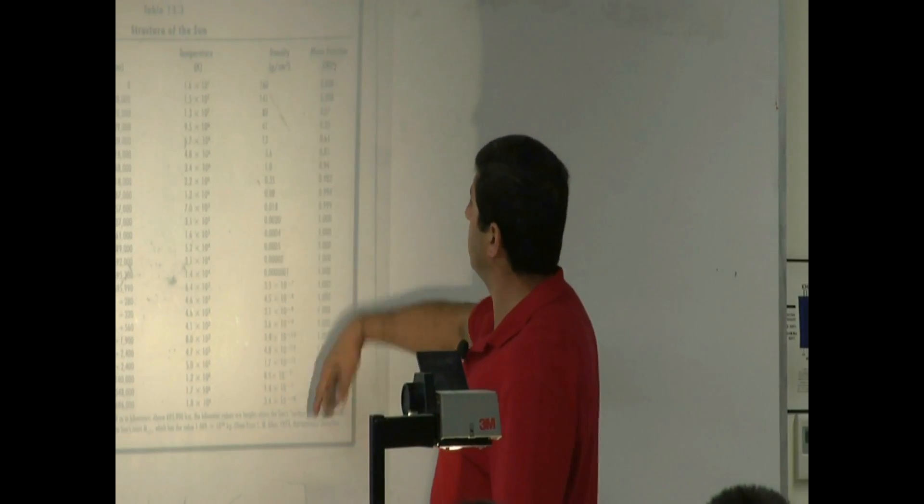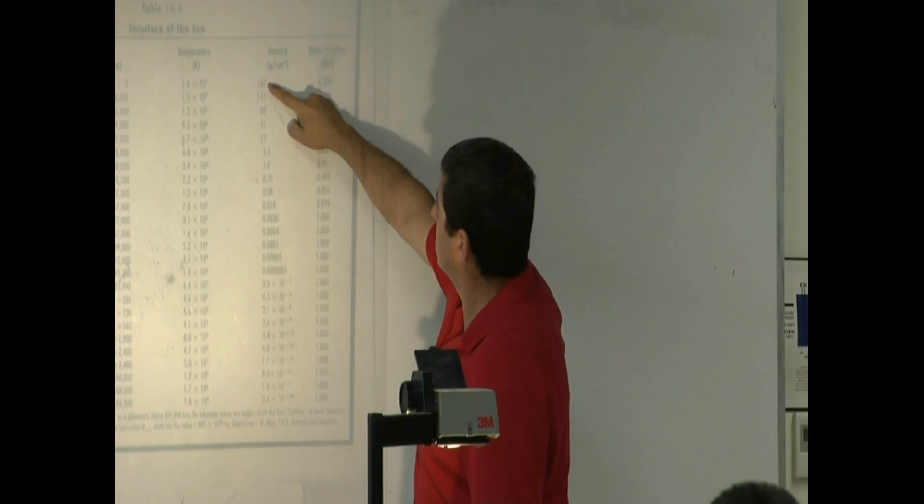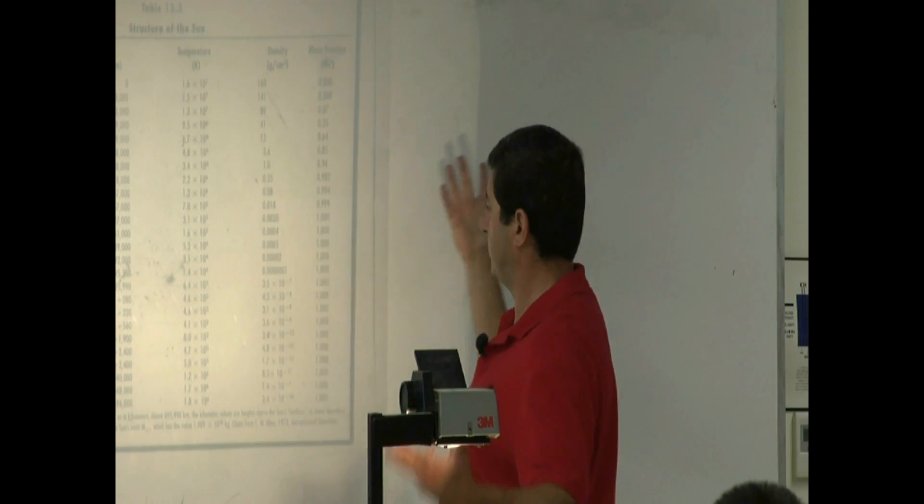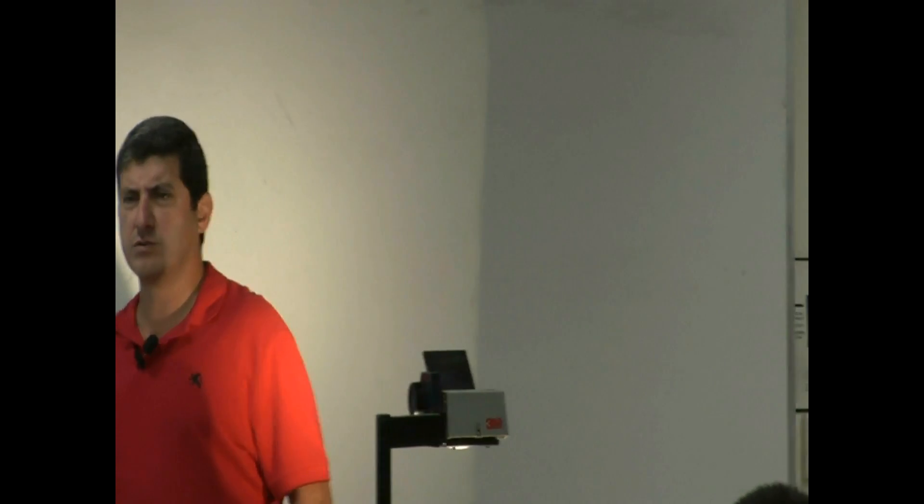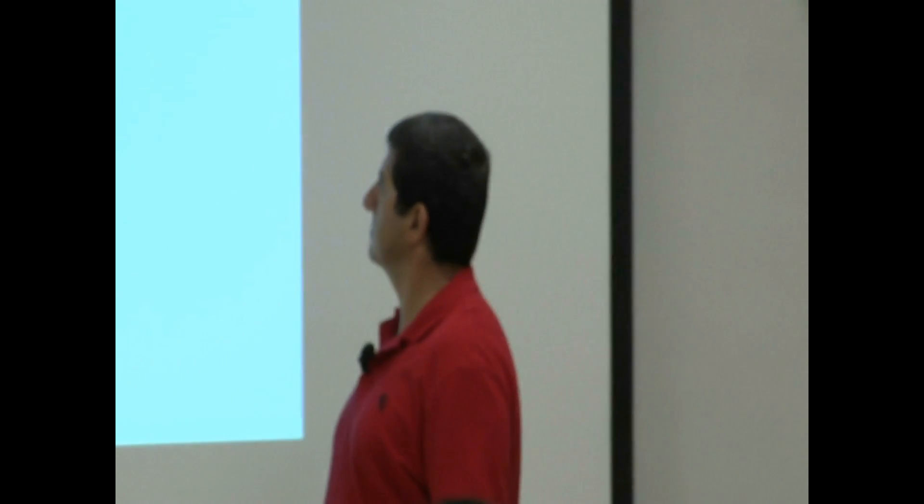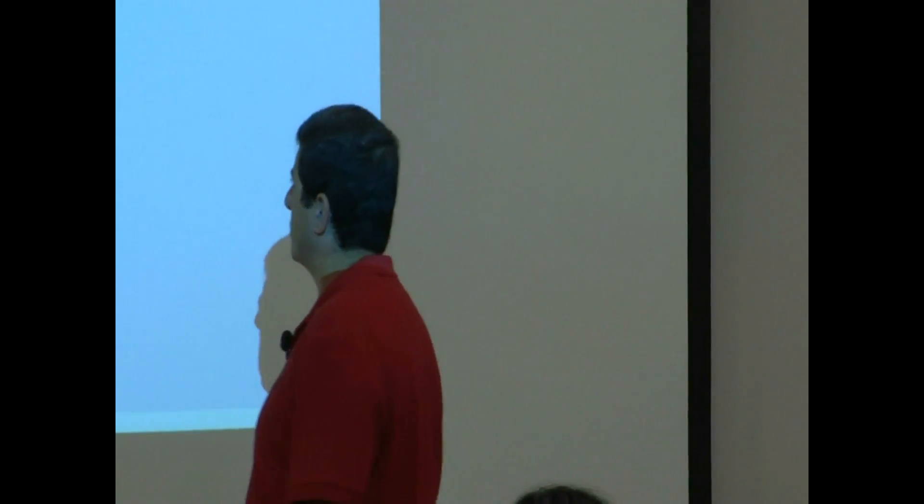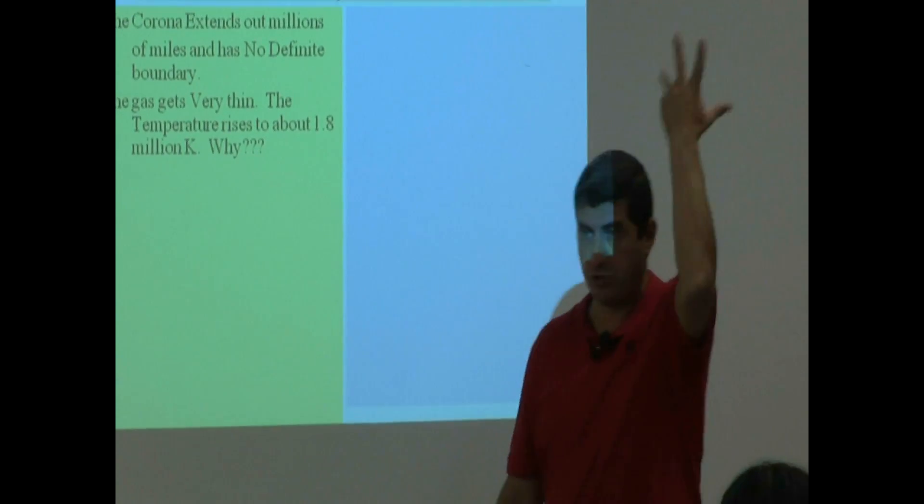And then this one tells you the density of the stuff. So you see, the core of the sun is 160 gram per cubic centimeter, but the density drops very, very quickly. By the time you get to the outside, there's almost no density, nothing. So that's the weird phenomenon that is kind of difficult to understand what's causing this. The corona extends out millions of miles and has no definite boundary. The gas in the corona gets very thin. As you saw, the density is very, very low. The temperature rises to about 1.8 million kelvin. Huge. All of a sudden, as you saw, it goes back into the millions.